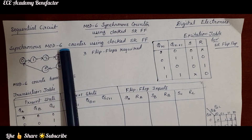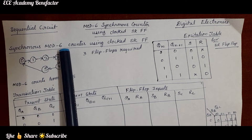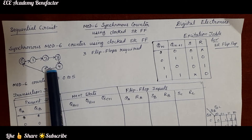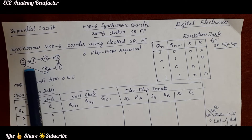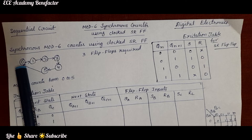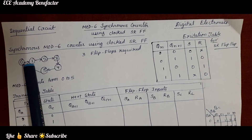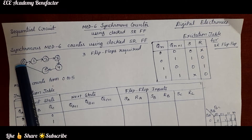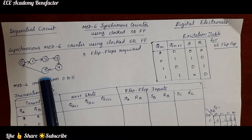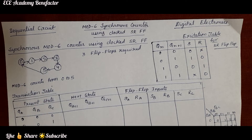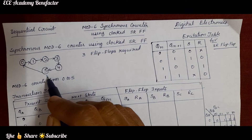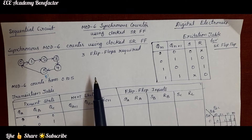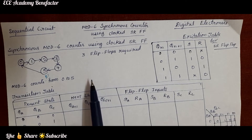We are designing a synchronous mod 6 counter. The first step is to draw the state diagram. Mod 6 counter means it can count 6 states from 0 to 5. After the 5th state it will go back to 0. The state diagram goes: 0→1, 1→2, 2→3, 3→4, 4→5, and from 5 back to 0. The largest number is 5, which requires 3 bits (101). So 3 flip-flops are required and we are using SR flip-flops.